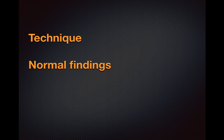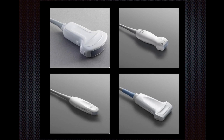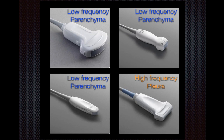In terms of transducer selection, there are a number of transducers to consider. The top left is the curvilinear transducer, often called the abdominal probe. The top right is the phased array, or cardiac transducer. There is also a micro-convex transducer and a linear transducer. The main consideration in deciding which to use is frequency. The curvilinear, phased array, and micro-convex are all low-frequency transducers, while the linear transducer is high-frequency.